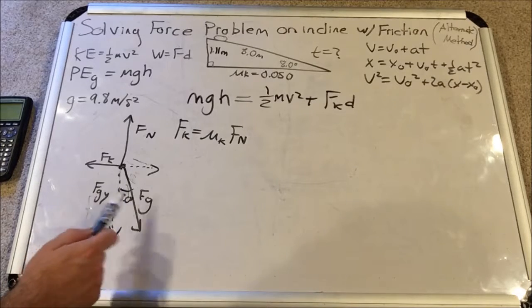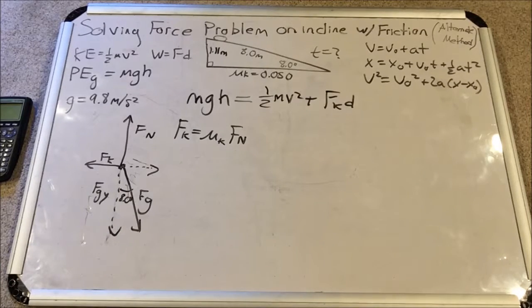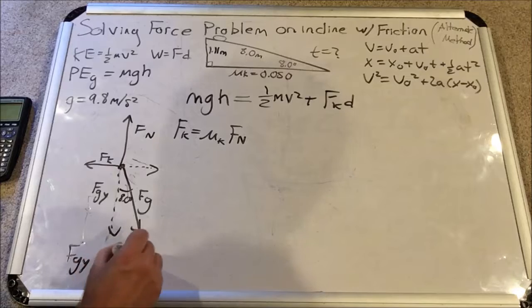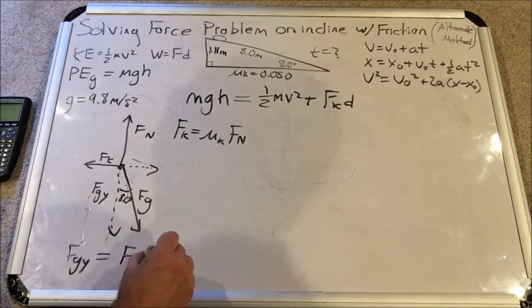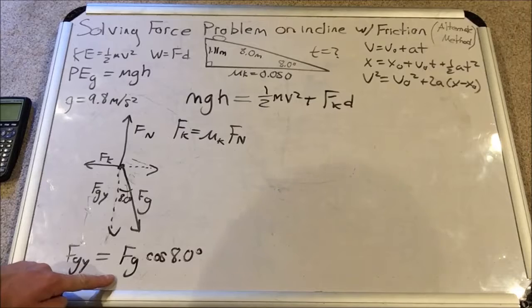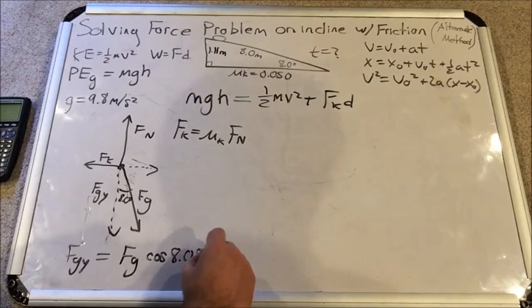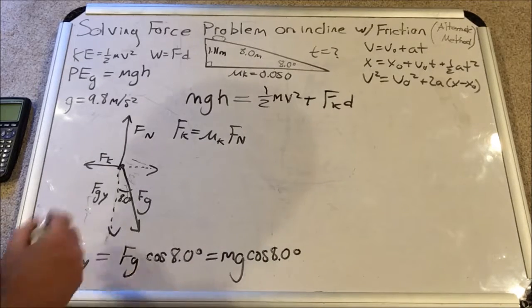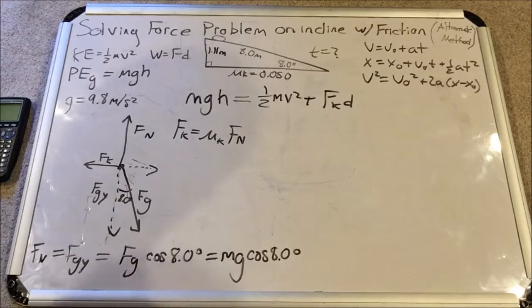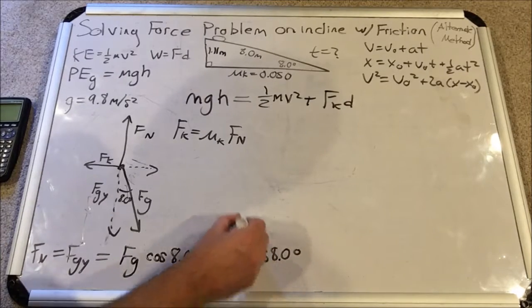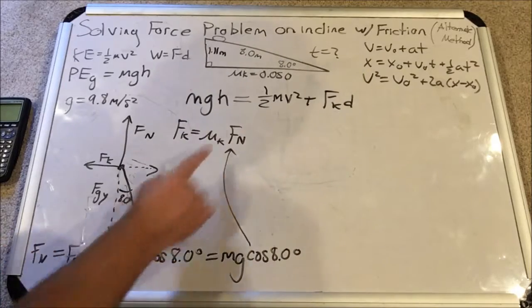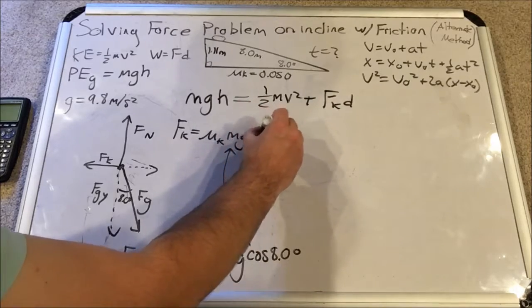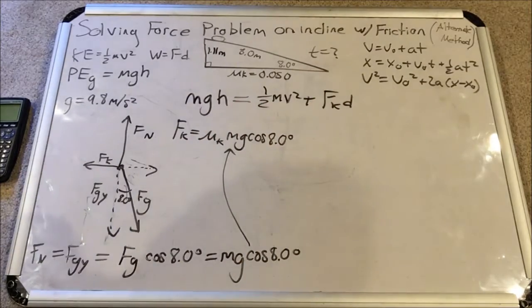fgy could be found by taking the cosine of this angle, saying it's equal to fgy over fg, and solving for fgy, we will get that the expression for fgy is fg cosine 8.0 degrees. And I can replace fg with mass times gravity. So we have mg cosine 8.0 degrees. Now that's equal to the normal force.